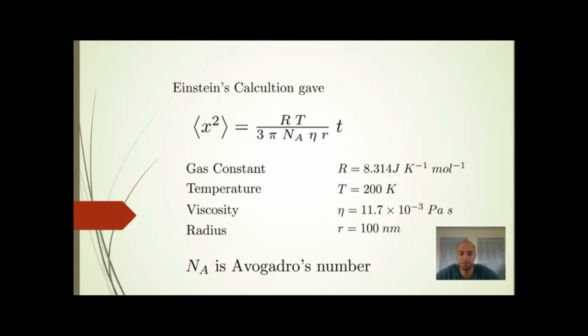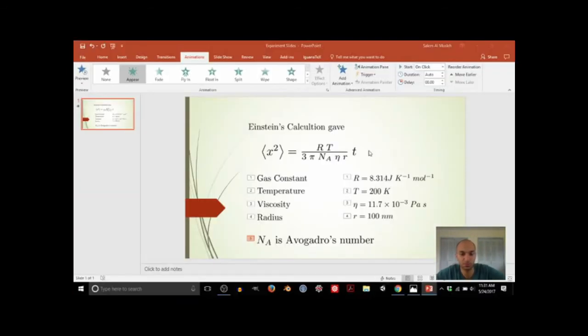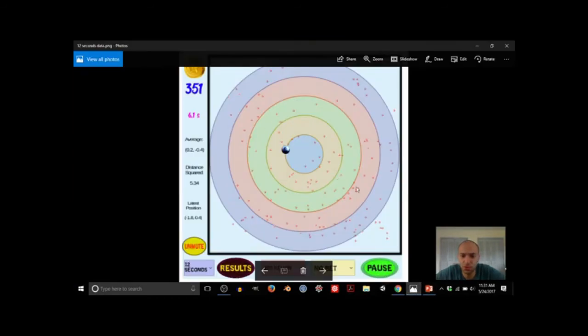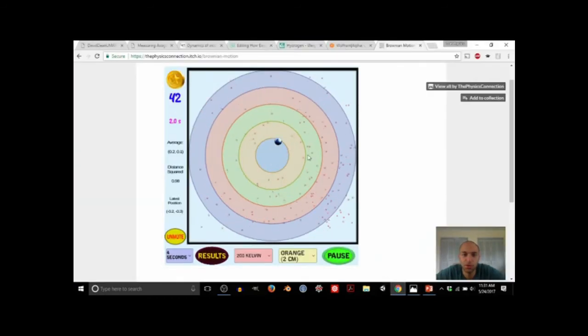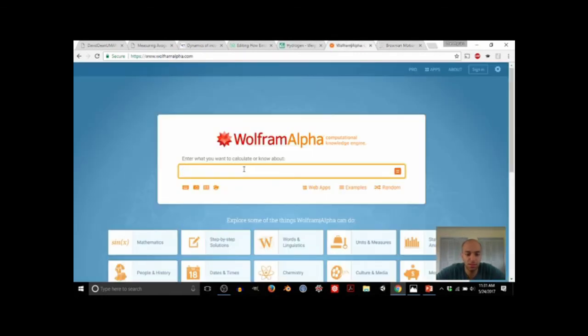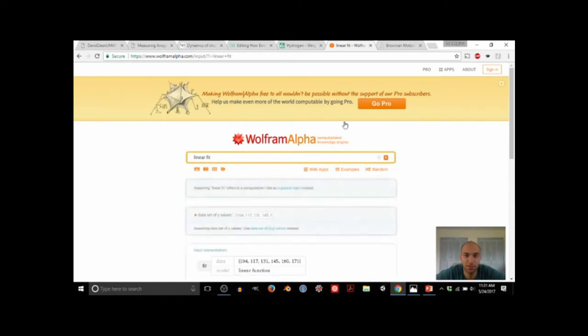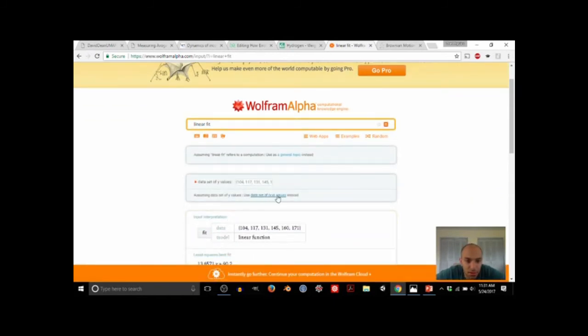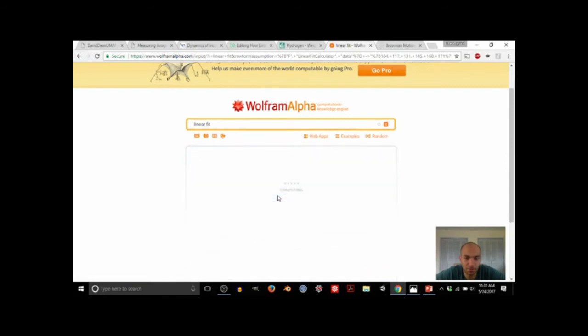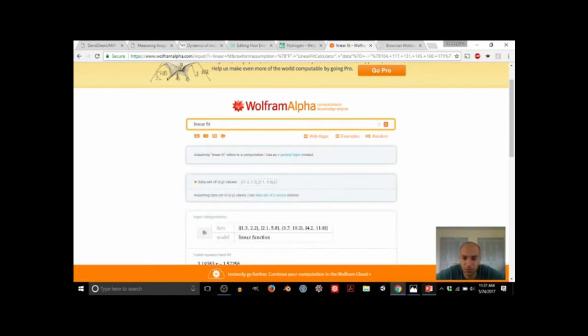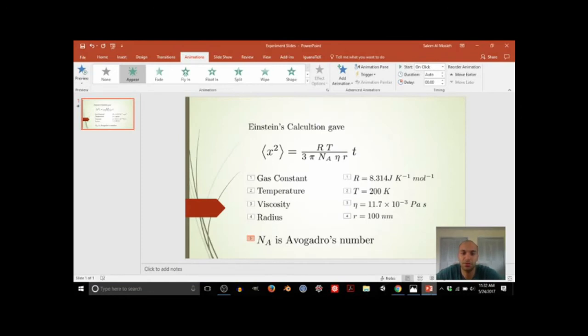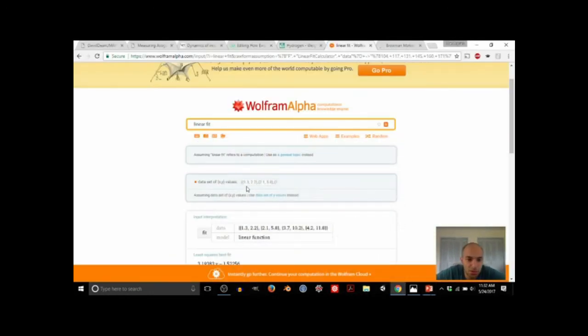After we did this, we did the experiment, it gives us a relationship between the distance squared and time, which we already had here. So you can go to WolframAlpha and say linear fit. We want to fit the data that we already made. Say data set, XY values.